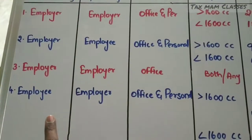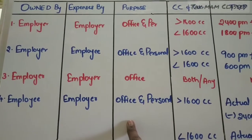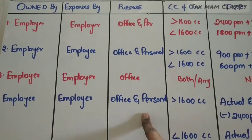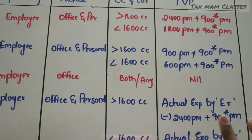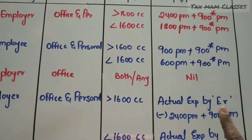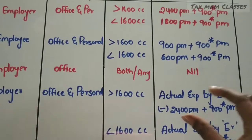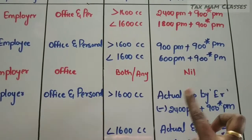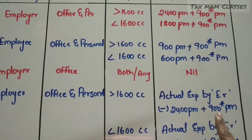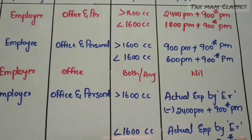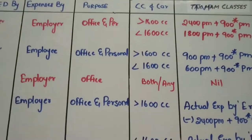In the fourth situation, the car is owned by the employee and the expenses are met by the employer, and the purpose is office and personal. If the car is a big car — more than 1600 CC — the taxable value of perquisite is: actual expenses met by the employer minus ₹2,400 per month, minus ₹900 if a driver is employed. The net amount remaining is the taxable value of perquisite.